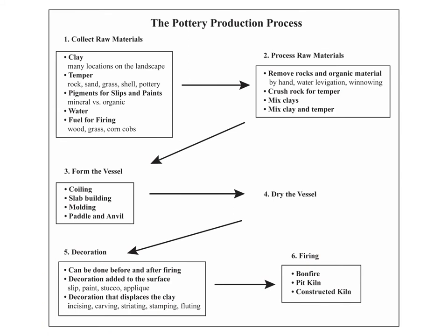The basic pottery production process is similar in many parts of the world. Potters first need to collect their raw materials. These raw materials are then processed, the vessel is formed into the desired shape, then decorated and fired. Not all of these steps are required for every ceramic vessel, and the raw materials used and the way that potters process, form, decorate, and fire pottery differs across the world and even within a single region. Potters can make a variety of choices, and many of these choices can be identified using thin section petrography.